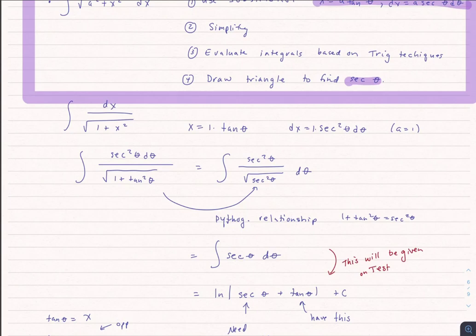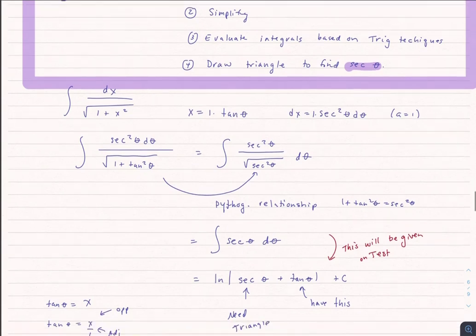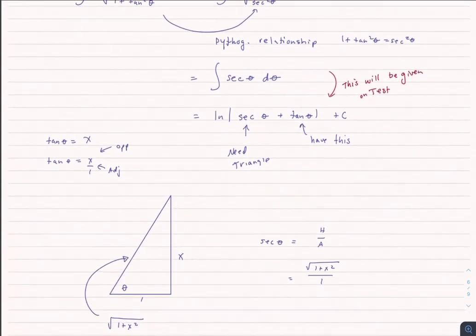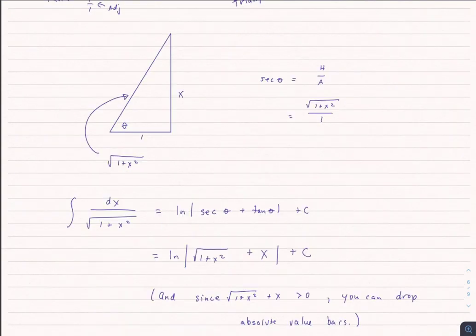I know what tangent theta is, but I don't know secant theta, so I'll use the same triangle approach. Tangent is x over 1 — opposite over adjacent. Drawing the triangle, the missing side (hypotenuse) is the square root of 1 plus x squared. Secant is the reciprocal of cosine, so hypotenuse over adjacent: square root of 1 plus x squared over 1. Bringing everything back into terms of x, the answer is the natural log of the absolute value of the square root of 1 plus x squared plus x, plus C.